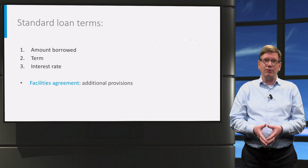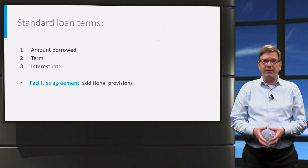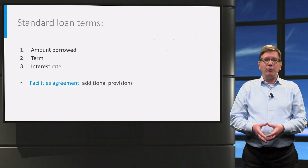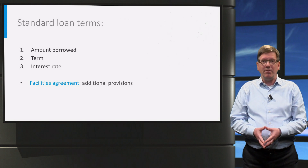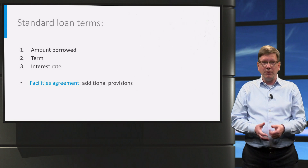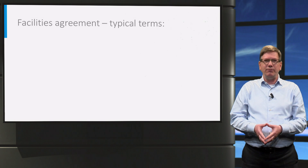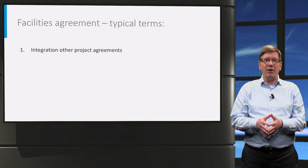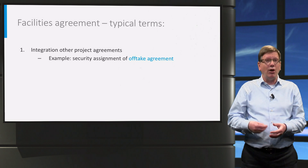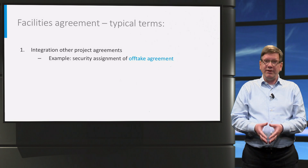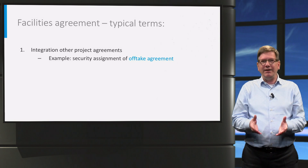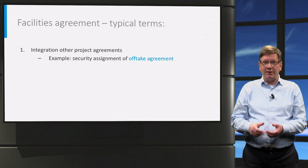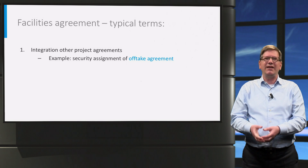However, in addition to these standard loan clauses, the facilities agreement will contain a number of very specific clauses that fit into the project finance context. The facilities agreement will make a direct reference to all the other agreements in the transaction bible, to signal that all these agreements collectively form part of the deal. Importantly, the off-take agreements will be referenced there, securing the revenue rights of the project company — the most important security for the lender. The rights of the off-take agreement will be assigned to the lender as security, in case the project company should default.